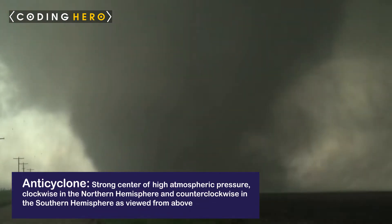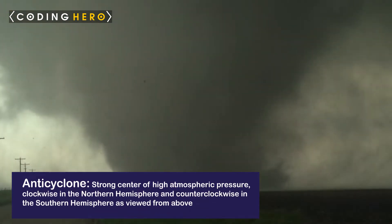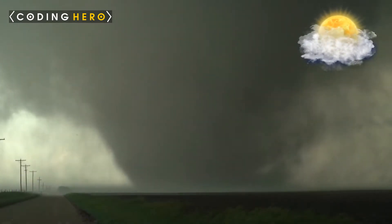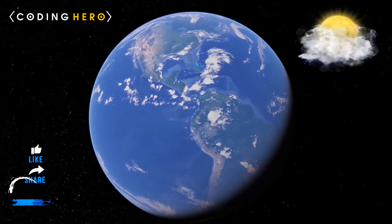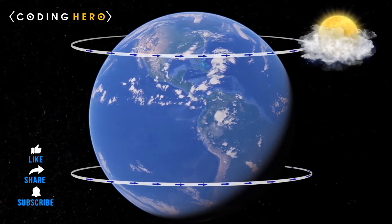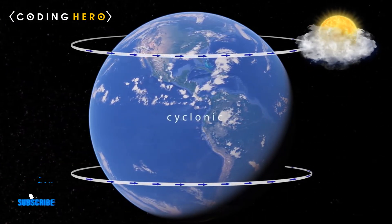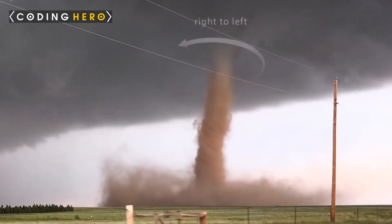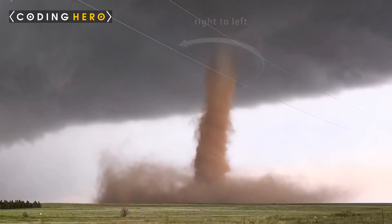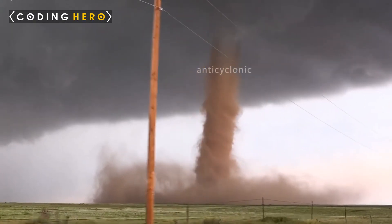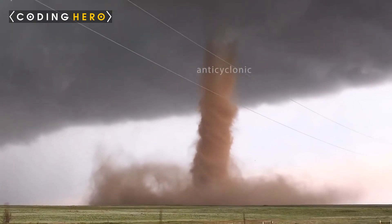Anticyclone. An anticyclone is a large scale circulation of winds around a central region of high atmospheric pressure — clockwise in the northern hemisphere and counterclockwise in the southern hemisphere as viewed from above. Effects of surface-based anticyclones include clearing skies as well as cooler, drier air or fog formation within a region of higher pressure.